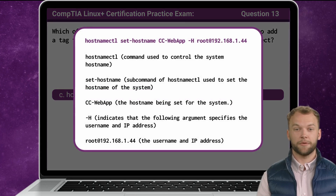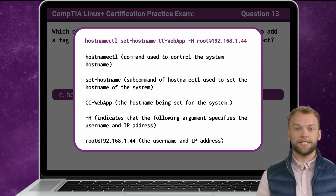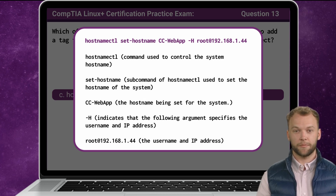Now that we know the answer, let's break it down. First, hostnamectl is a command utility used to control the system hostname. Next, set-hostname is a subcommand of hostnamectl used to set the hostname of the system. cc-webapp is the selected hostname being set for the system. The -h option indicates that the following argument specifies the username and IP address. Here, root will be the username associated with the IP address 192.168.1.44.